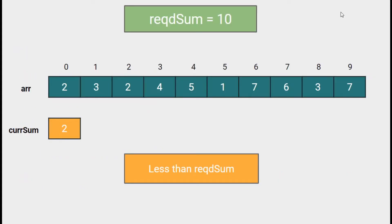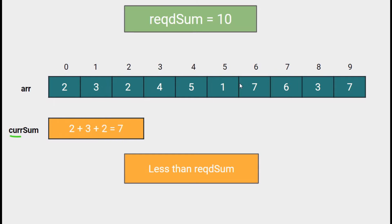The technique we are going to use here is known as the sliding window technique. We are going to make use of a variable called currentSum and start accumulating the numbers one by one from the beginning of the array, as long as the currentSum is less than the required sum.